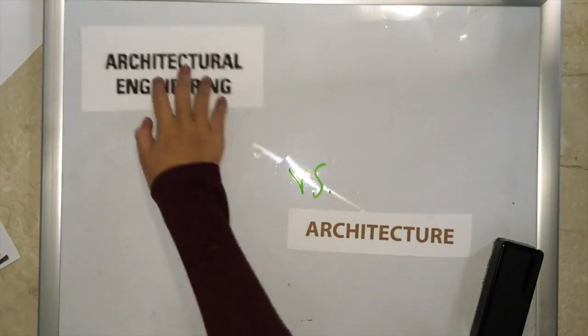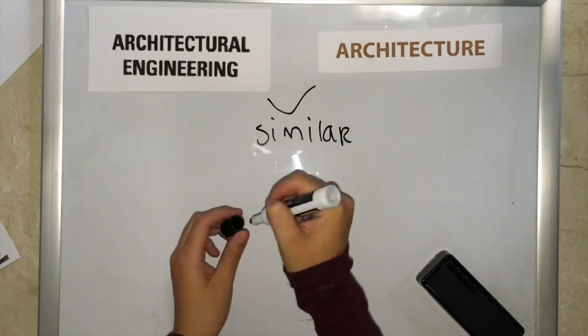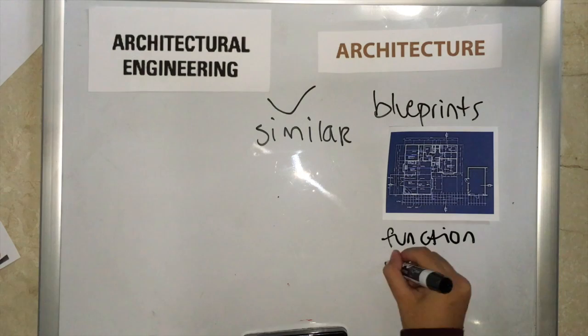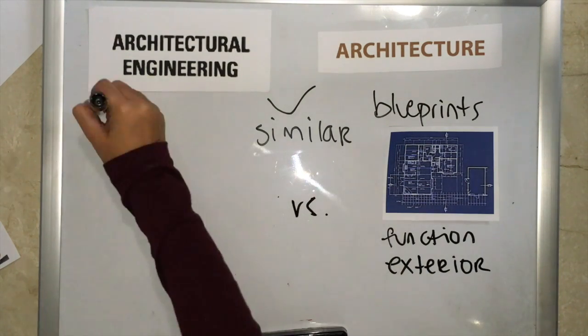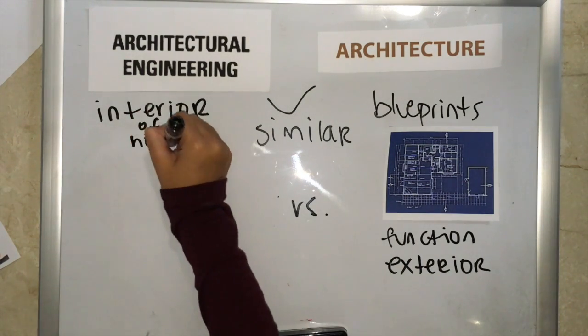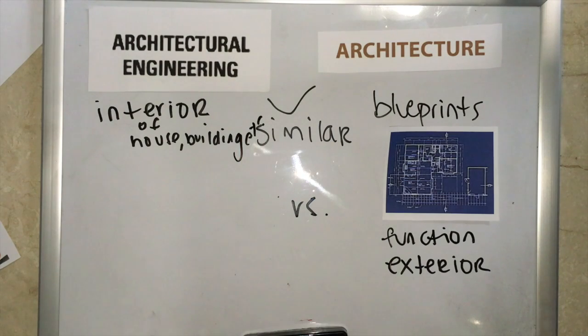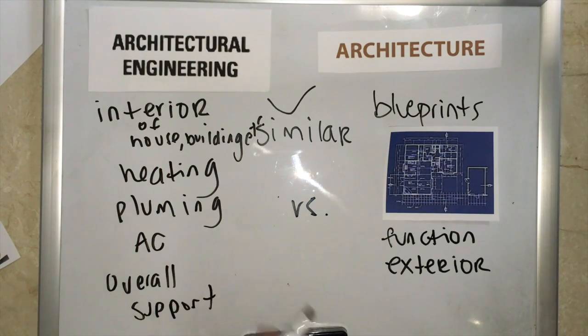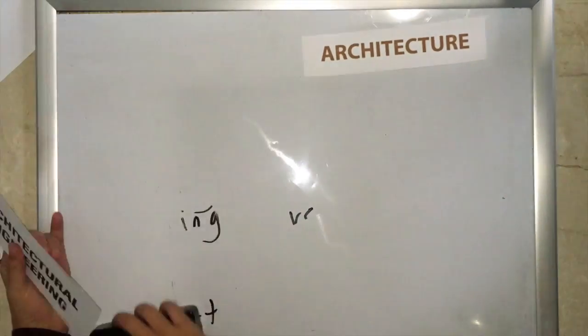So are architecture and architectural engineering the same thing? They both study and do similar things but they focus on different principles. For example, architecture is blueprints, function, and exterior and architectural engineering focuses on the interior, the heating, plumbing, AC, and overall support of the building or house.